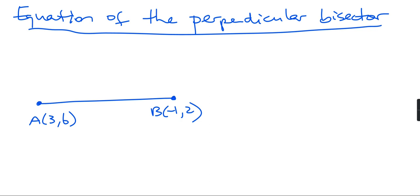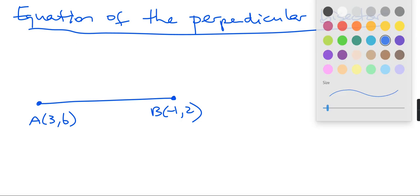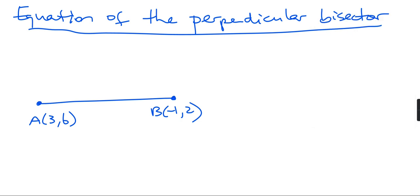We're going to talk about what is a perpendicular bisector. The word perpendicular means it cuts something at 90 degrees, and bisector means it cuts in half.